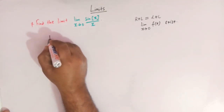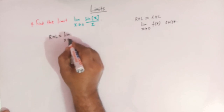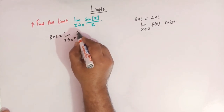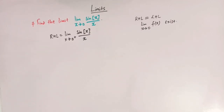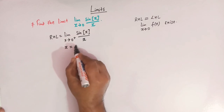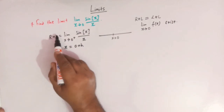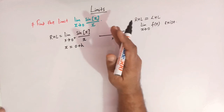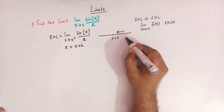Let us first find out the right hand limit. The notation for right hand limit is the limit x tends to 0 plus. We write a positive sign and then we write this function, that is sine of greatest integer of x divided by x. To move further, we'll take x is equal to 0 plus h. Here we have the point x equals 0 and we are calculating the right hand limit, meaning we are approaching towards x equals 0 from the right, and all the values which lie towards the right of x equals 0 are greater than 0.